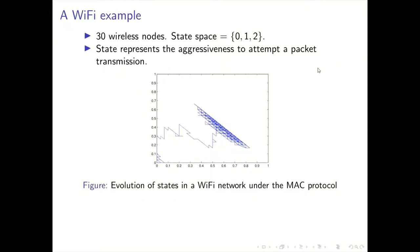This Wi-Fi example has 30 wireless nodes and each node has a state associated with it. That state can either be 0, 1, or 2. The state of a node essentially represents the aggressiveness with which a packet is transmitted. In this example, state 2 is the most aggressive state and state 0 is the least aggressive state. Each node changes its state over time depending on whether a packet transmission results in a collision or a successful transmission.